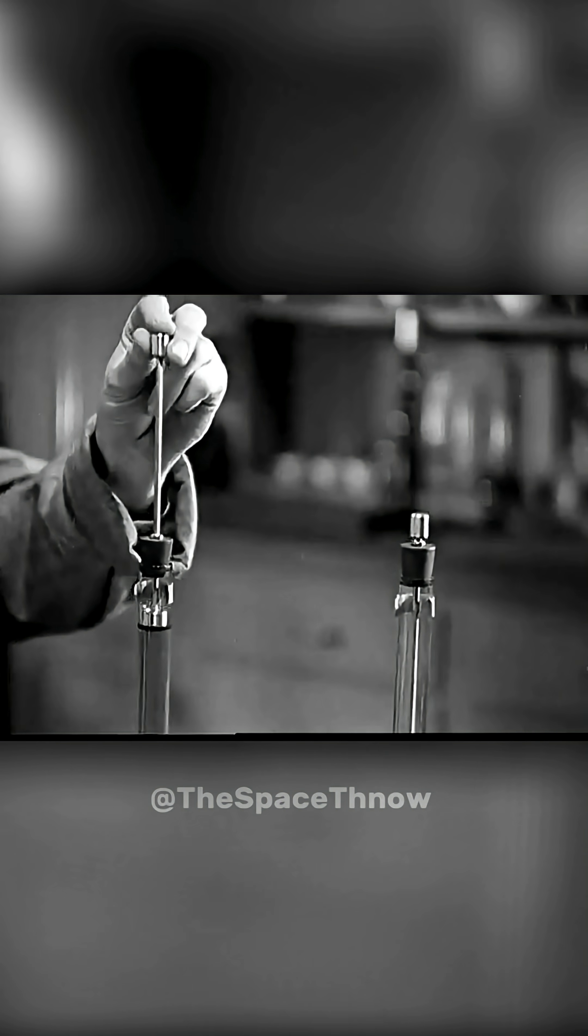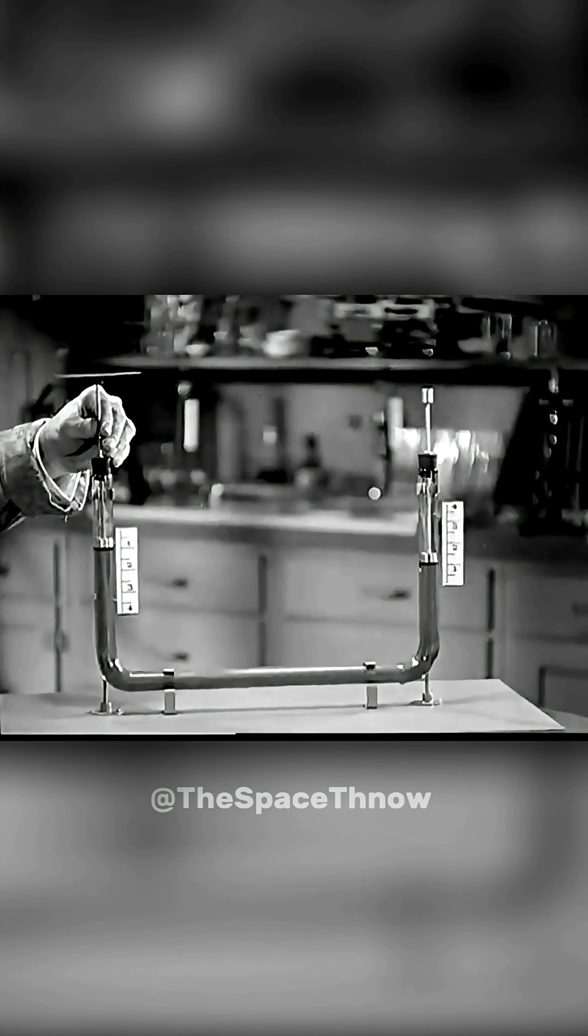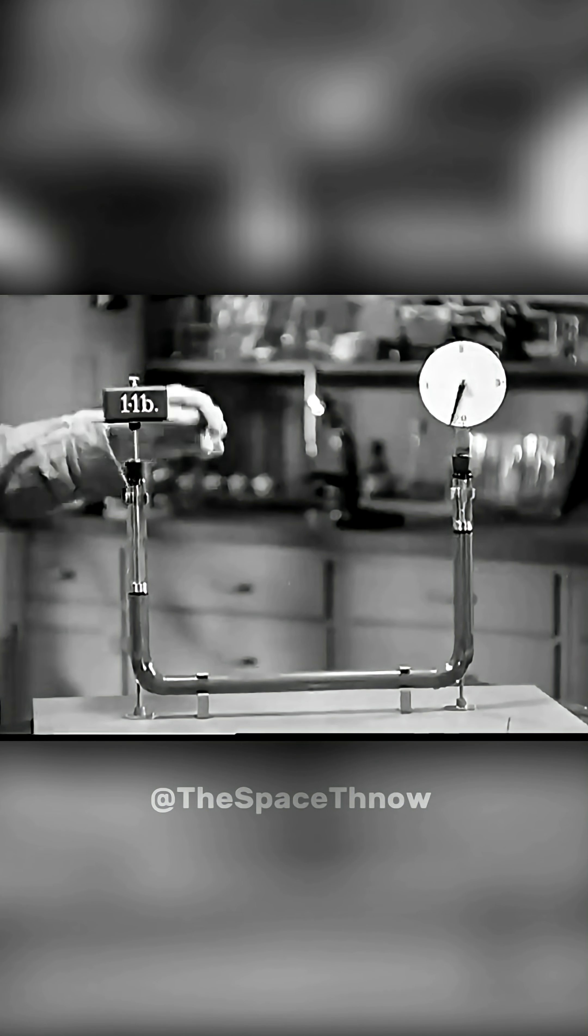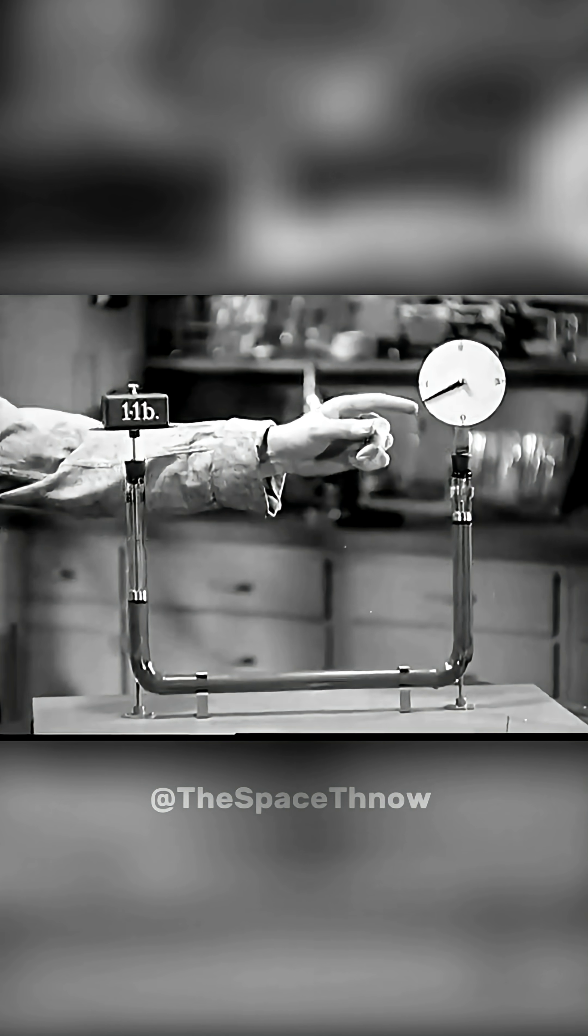engineers filled a pipe with liquid and placed pistons at both ends. As soon as pressure was applied to the first piston, it moved one inch downward, and the piston on the other side rose one inch upward with the same force. That means not even a bit of power was lost.